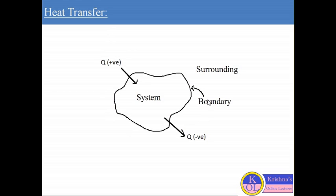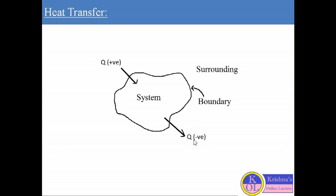In this diagram you can see a system and its surroundings, separated by a boundary. The concept of heat is: when heat is flowing into the system, we consider heat as positive. If the heat is flowing out of the system, we consider the heat as negative. So heat flowing into the system is positive, and heat flowing out of the system is negative.